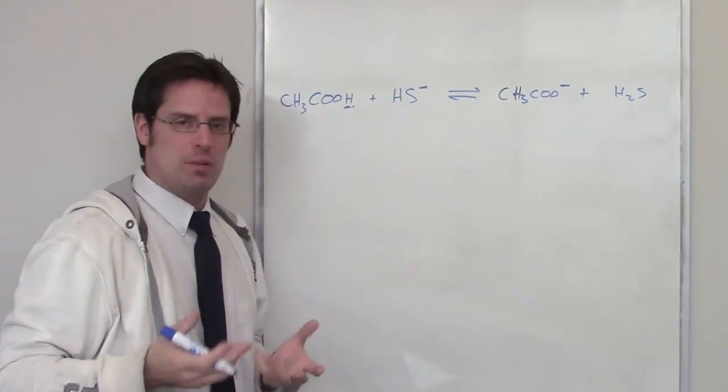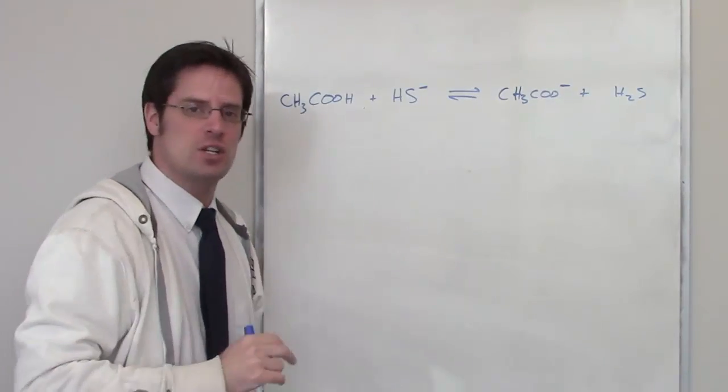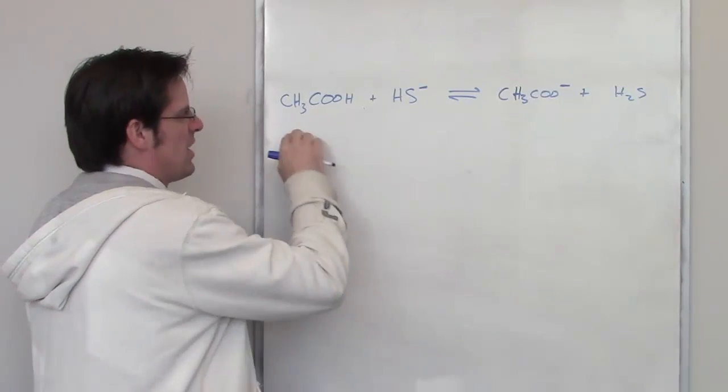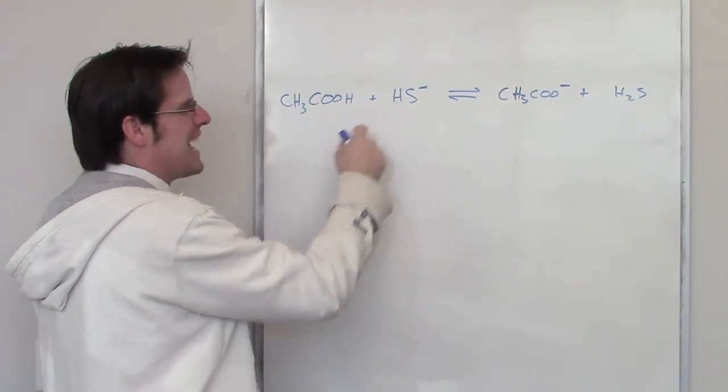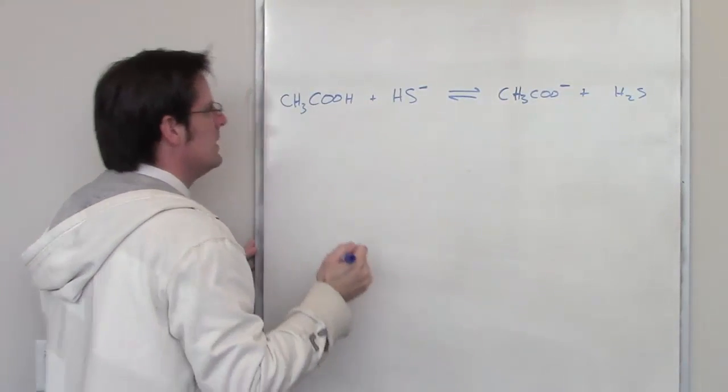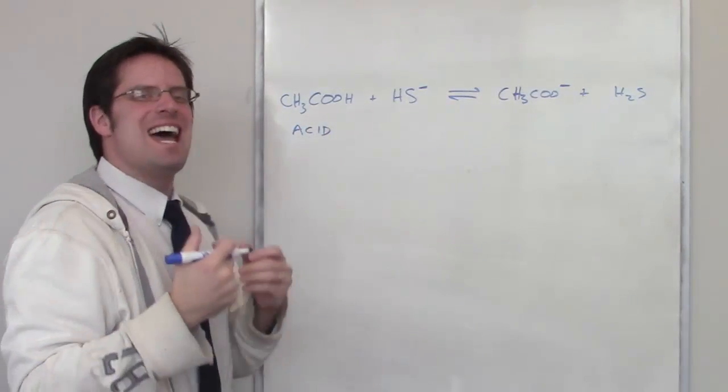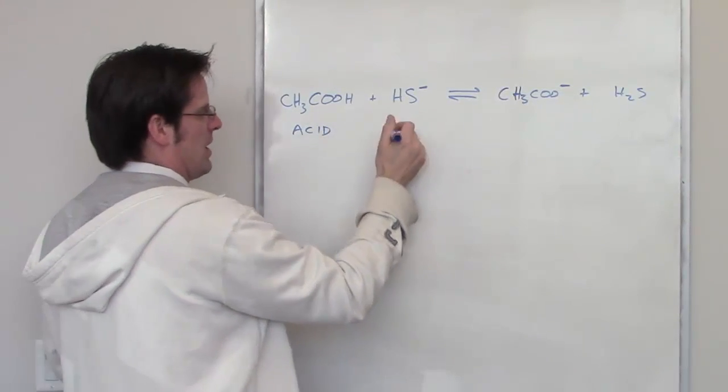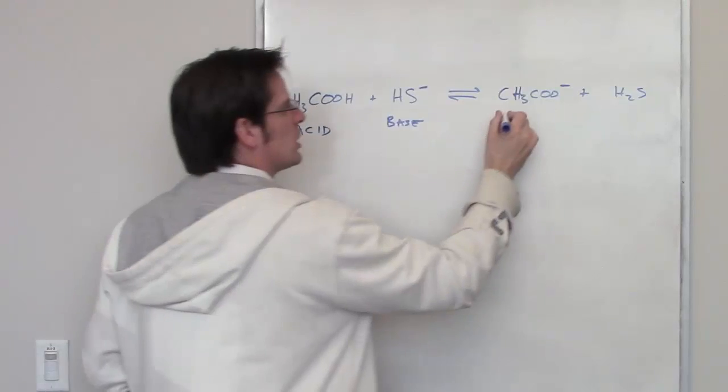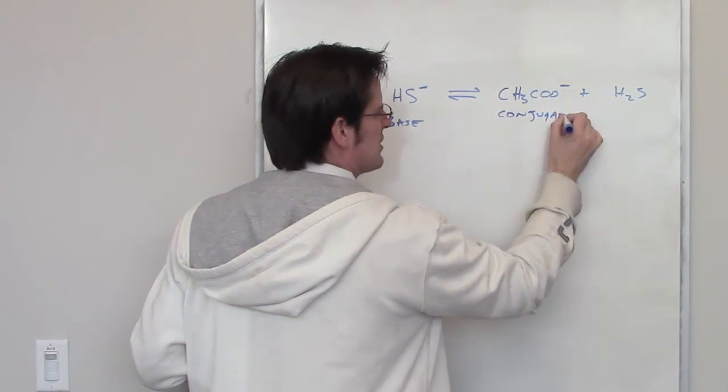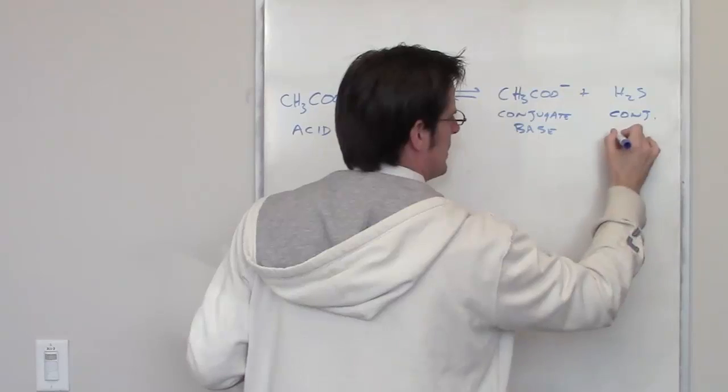The next thing we need to do is determine which thing is the acid, which one's the base, what's the conjugate acid, and what's the conjugate base. As I talked about in an earlier video, the acid is the thing on the left side of the equation that gives up a hydrogen as you move to the right. Which of these two things gave up a hydrogen as it went over to the right? Yeah, it's this thing. So this molecule is the acid. Which of the two things on the left side of the equation accepted that hydrogen or stole this hydrogen? It's this guy right here. That's the base. The thing that this acid turns into over here is its conjugate base. And the thing that this base turns into is its conjugate acid.